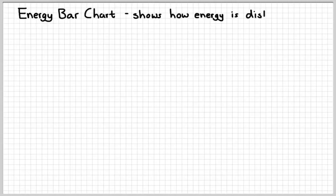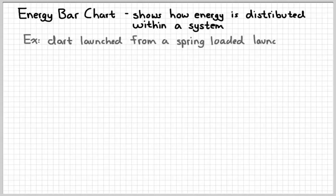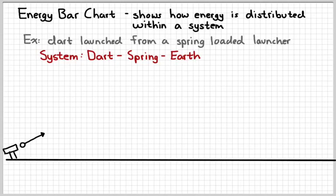One way that we can help ourselves understand what's going on in a system is to draw an energy bar chart. That shows us how energy is distributed within a system. As a simple example, let's suppose that we have a dart that's being launched from a spring-loaded dart gun. The system would have to include the dart, the spring, and the earth. If we include those three objects as part of our system, the internal forces between the dart and the spring and the dart and the earth are conservative, and we can say that the energy of the system is being conserved.